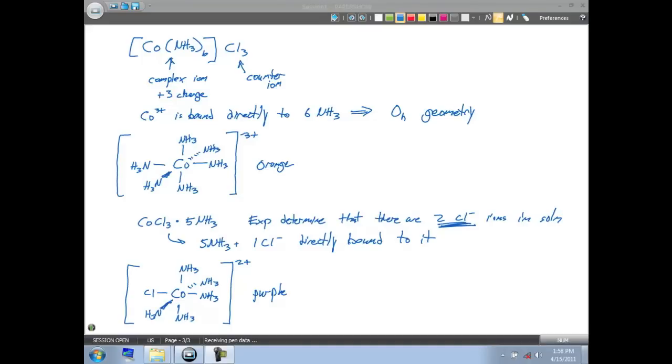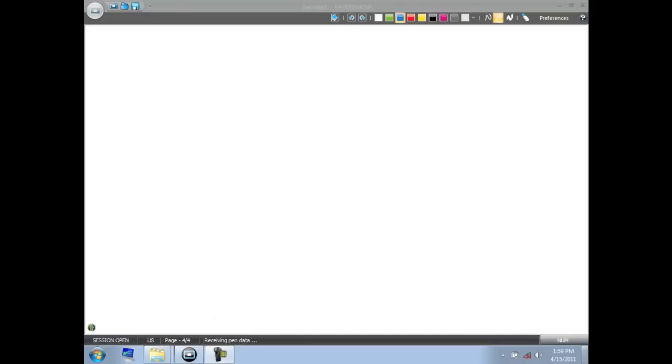So when you put a different amount of ligands around a particular complex, you can have different scenarios that happen. So if we look into the CoCl3·4NH3, again, hopefully you start seeing a trend emerging here. And experimentally, if we were going to try to dictate what's happening here in the solution, the cobalt 3 plus is bound to 4NH3 and 2Cl-.